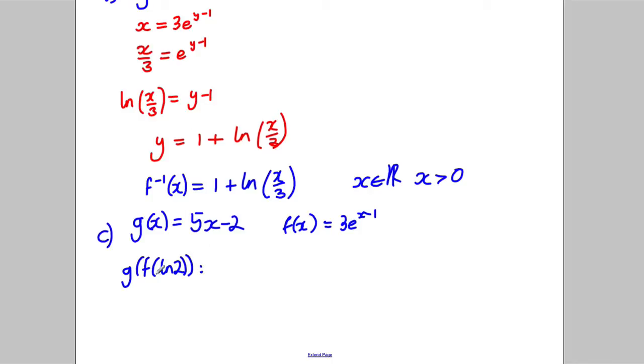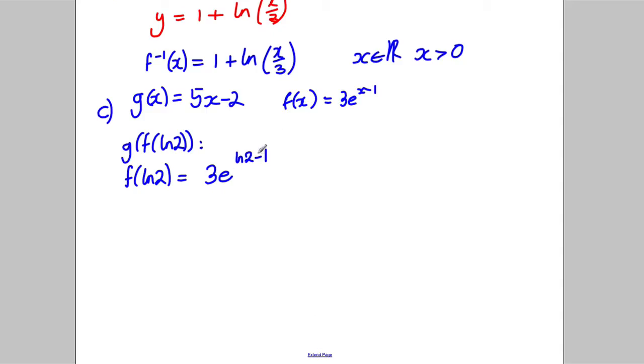So let's do it in stages. Firstly, what's f of the natural logarithm of 2? Well, let's put it in here. It's 3e^(ln2-1). So what's that going to be? We could break that into 3e^(ln2) multiplied by e^(-1). And e^(ln2) is 2. So 3 times 2 is 6. It's going to be 6e^(-1) or 6/e, if you like, writing it in that form.